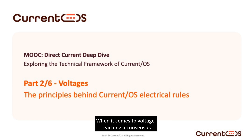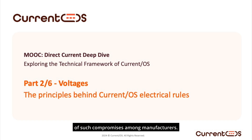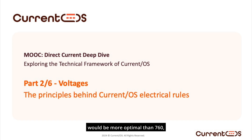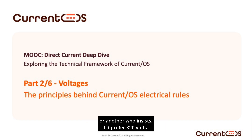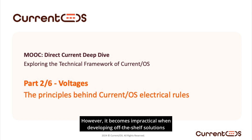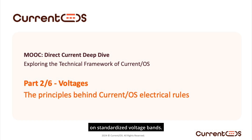When it comes to voltage, reaching a consensus is critical to be interoperable. However, consensus often requires compromise. The voltage bands Current OS chose represent the result of such compromises among manufacturers. For any given application, such as an electric vehicle charging system, you'll always encounter someone who argues 840 volts would be more optimal than 760, or another who insists they'd prefer 320 volts. This level of customization works for engineered-to-order solutions, but it becomes impractical when developing off-the-shelf solutions that must ensure interoperability between products from multiple manufacturers. In these cases, design offices must be able to assemble components from various brands seamlessly, and this requires alignment on standardized voltage bands.